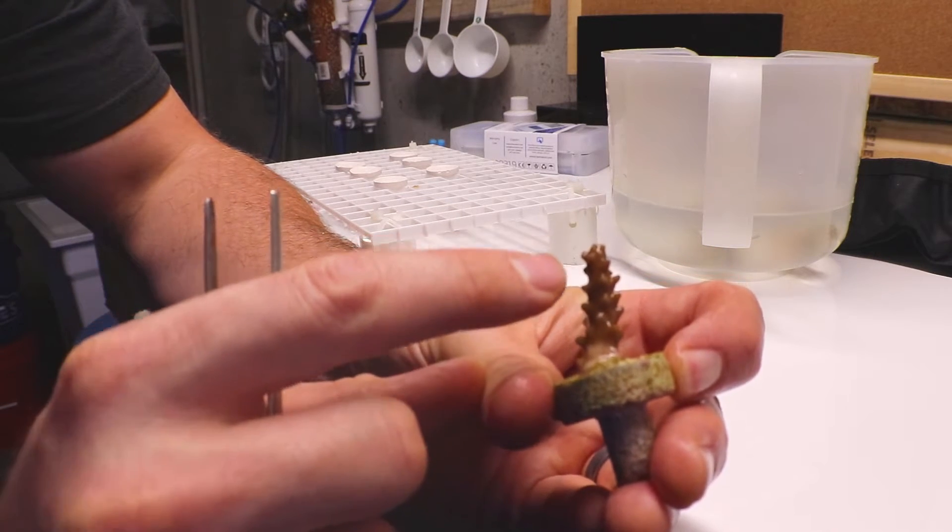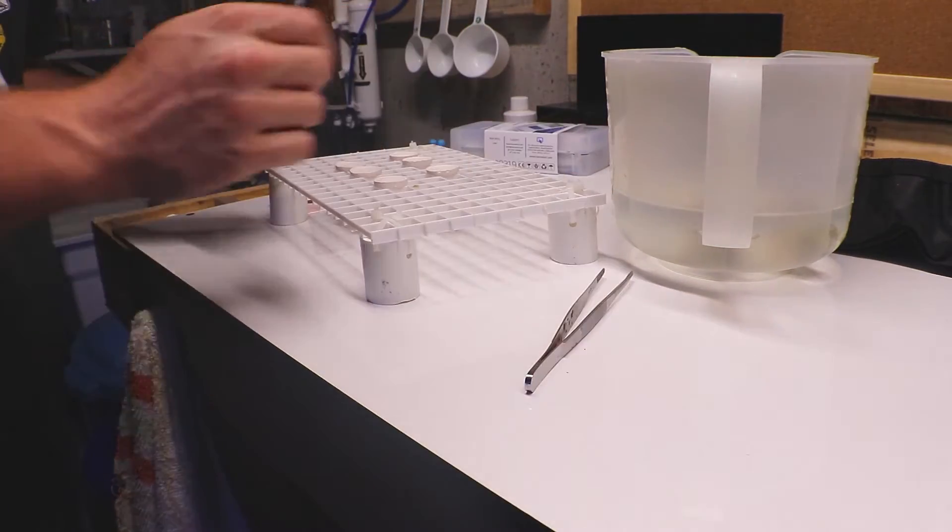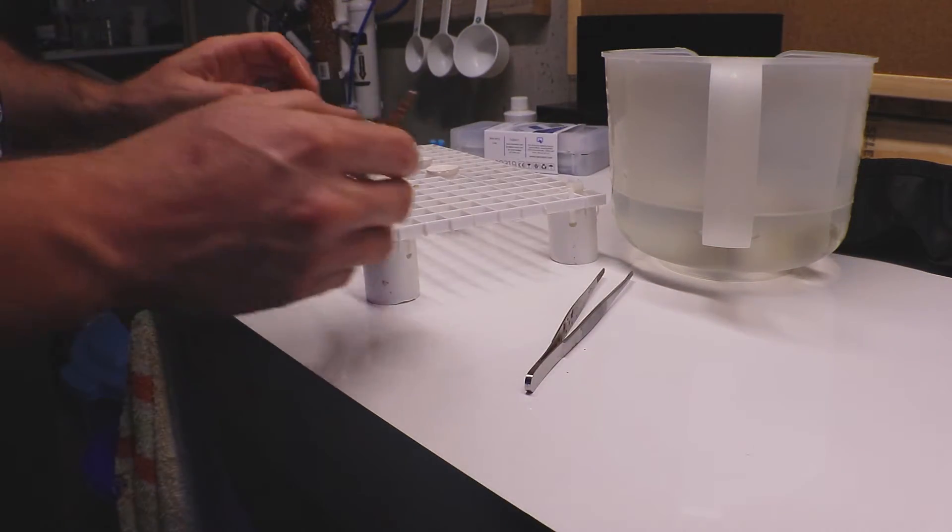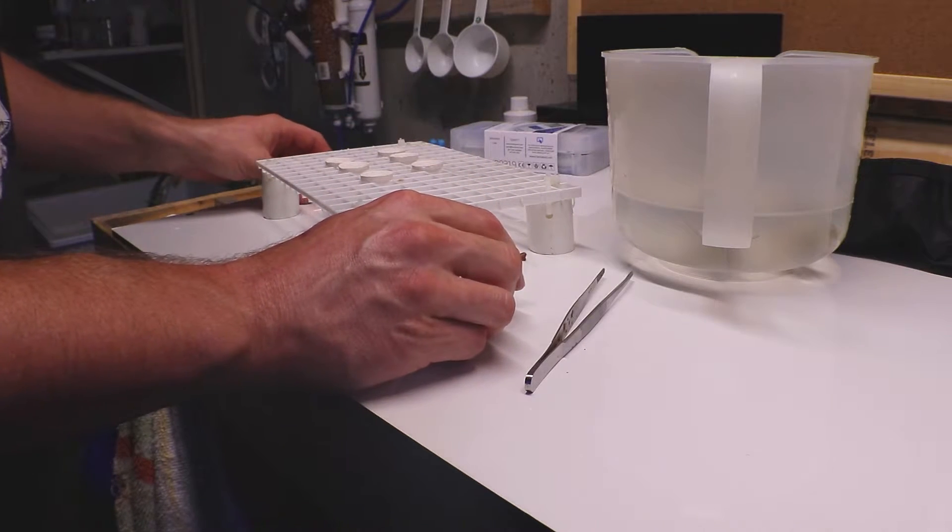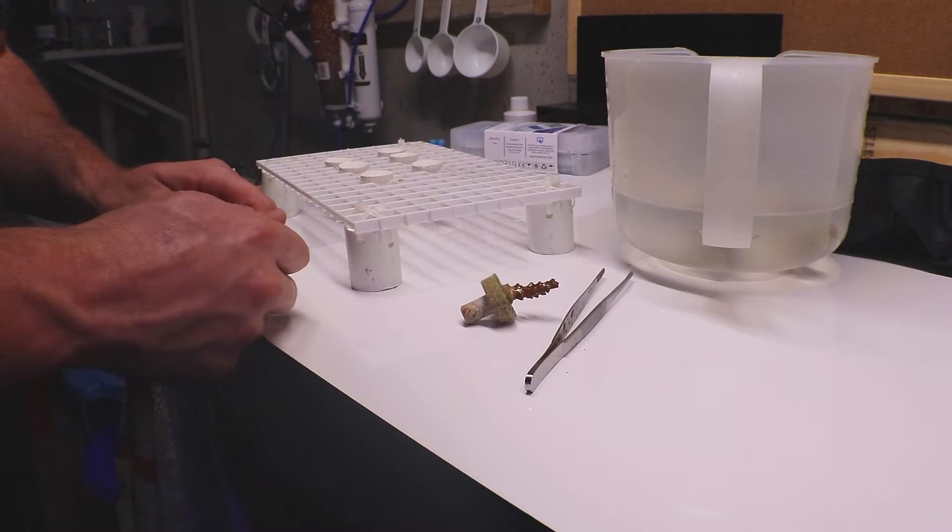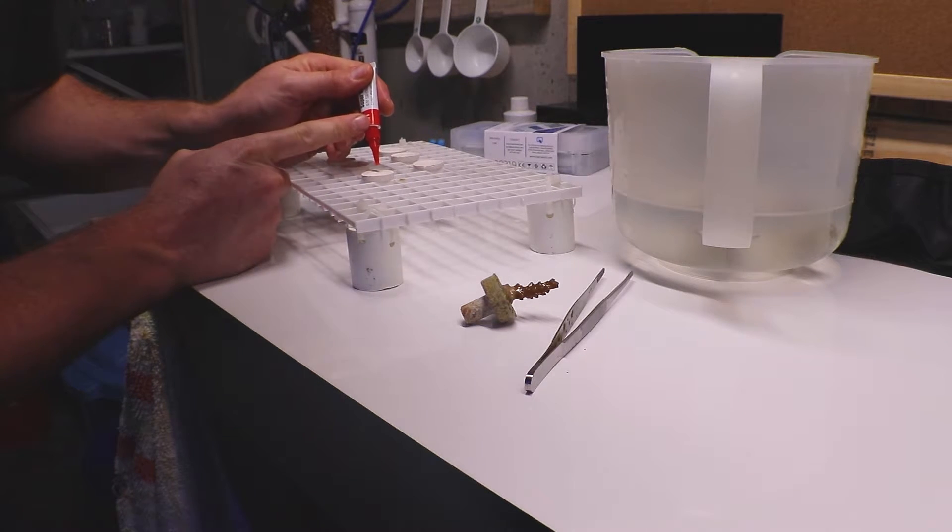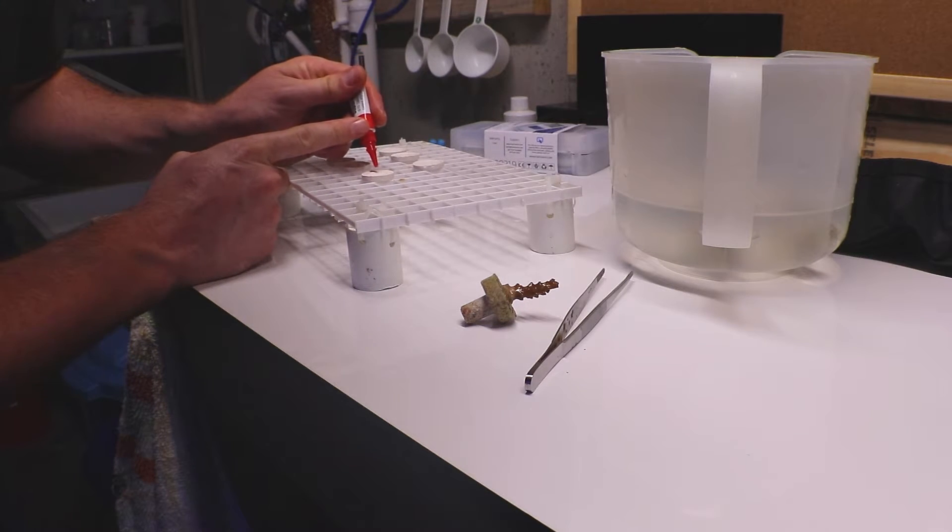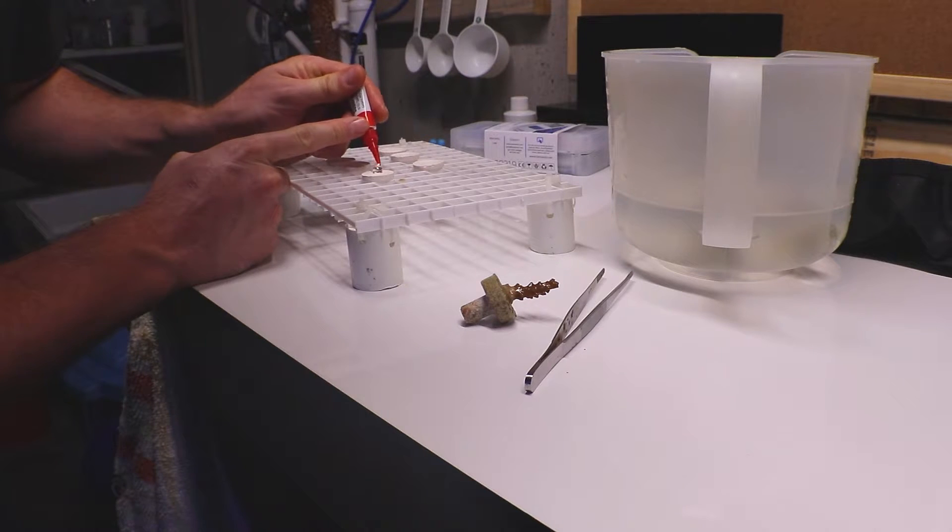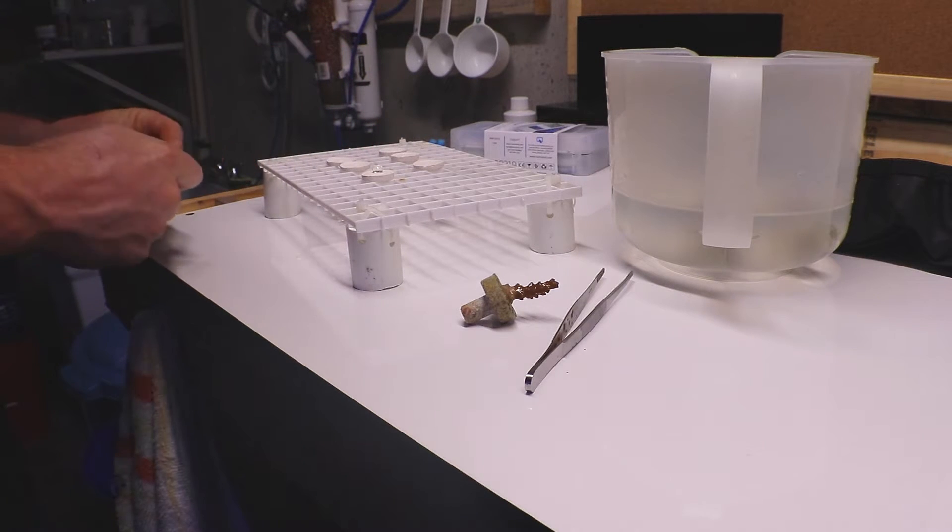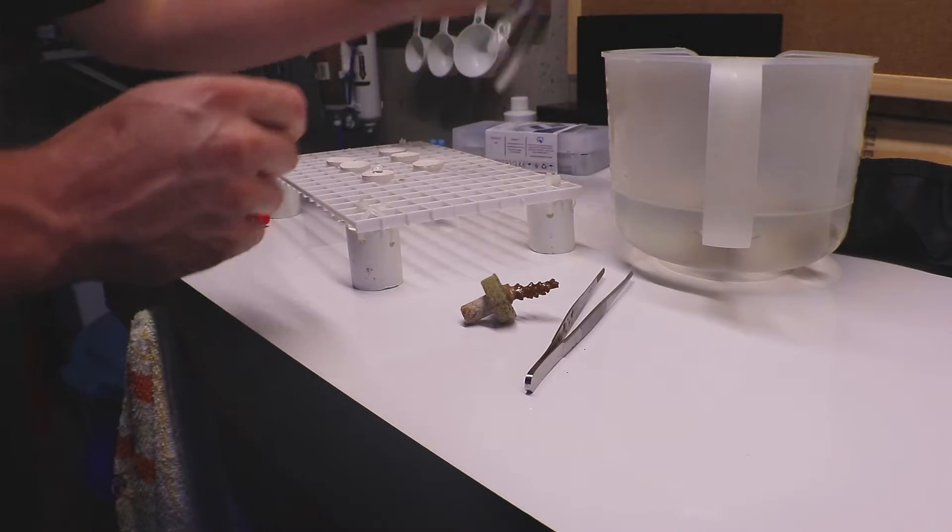What I'm going to do is, you can see the white spot at the base here, I'm going to attempt to frag these guys. I'm going to go just above the bad tissue and cut the coral off. That's where I'm going to frag it, just above the bad tissue. We're going to glue it to a new frag plug and try to save these guys.